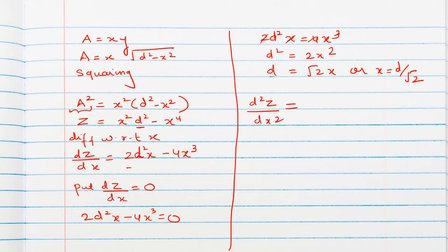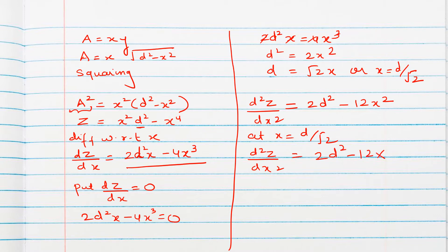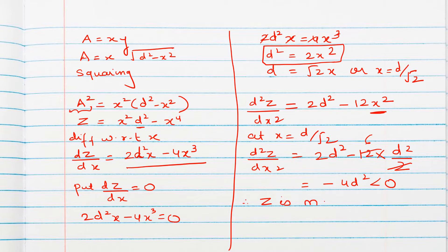Differentiating dz/dx = 2d²x − 4x³ again: d²z/dx² = 2d² − 12x². At x = d/√2, substituting x² = d²/2, we get 2d² − 12·(d²/2) = 2d² − 6d² = −4d², which is negative. Therefore z is maximum, and since z = A², therefore area A is maximum.